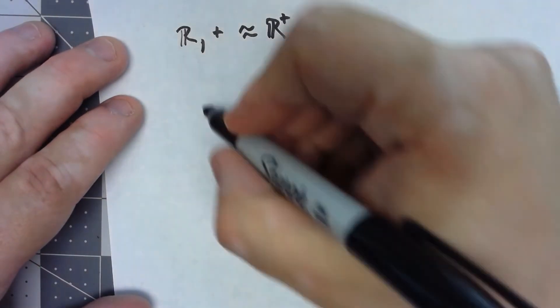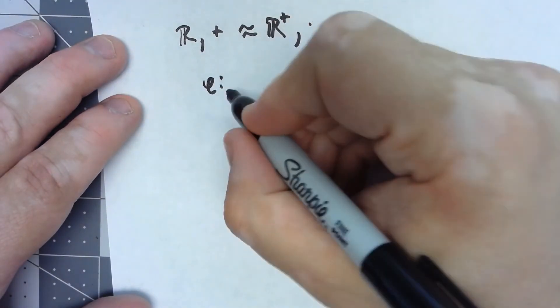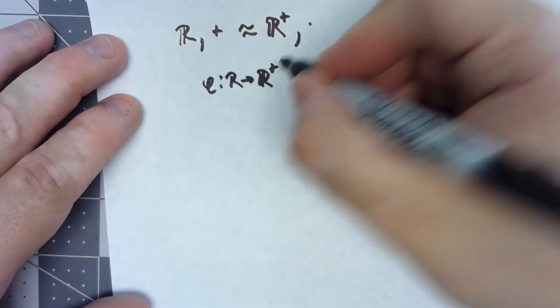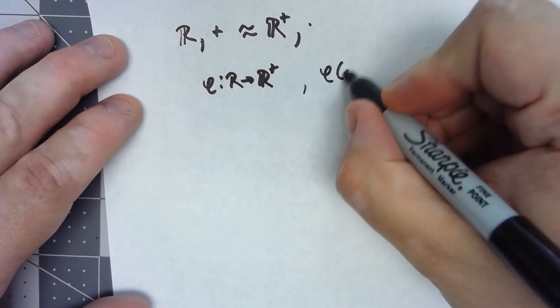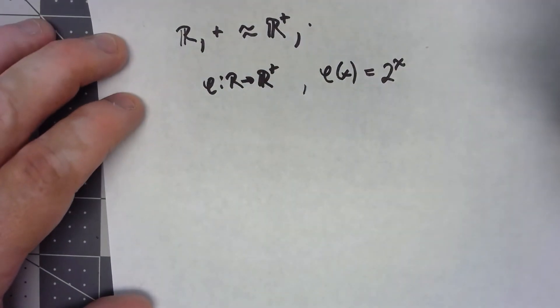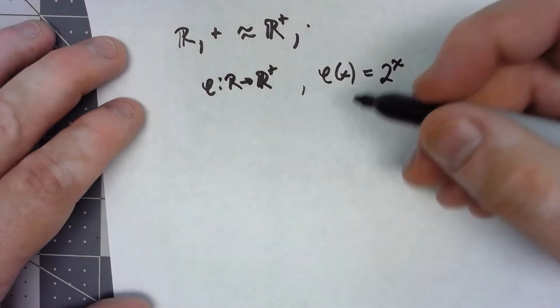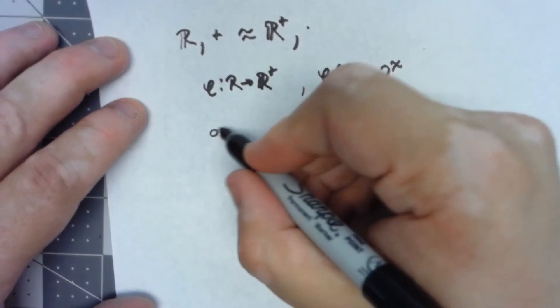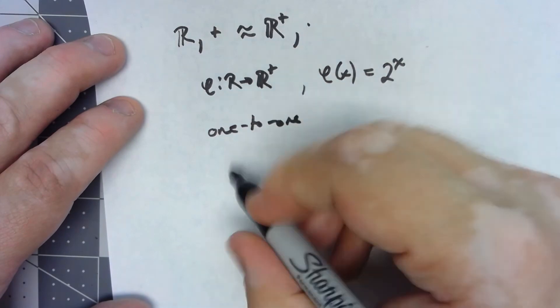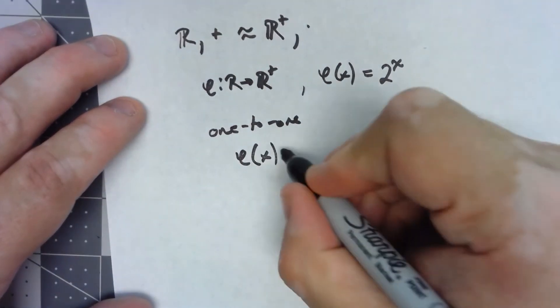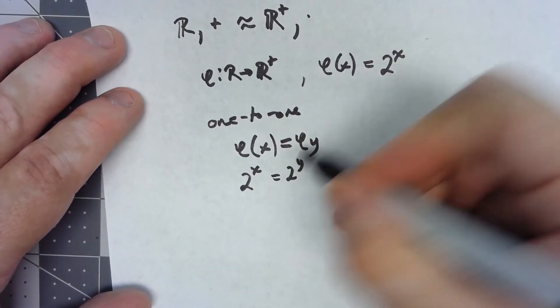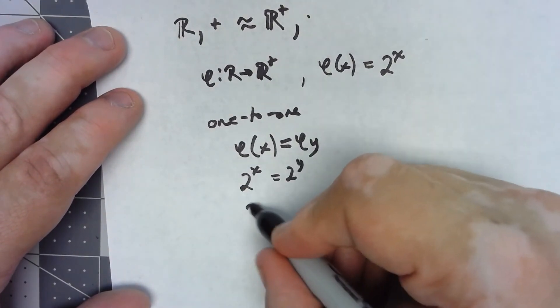I can say phi goes from R to R+ defined by phi of x equals 2 to the x power. That is one to one, since phi of x equals phi of y means 2^x equals 2^y, and that just means x equals y.